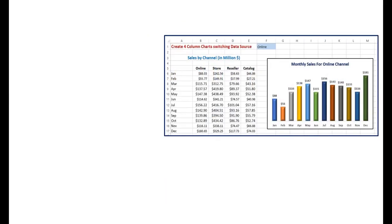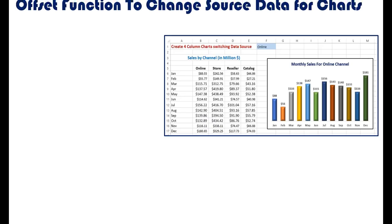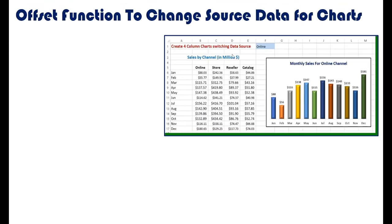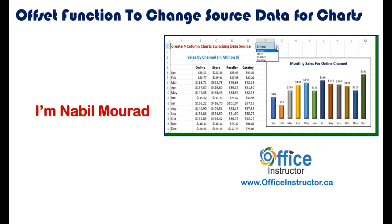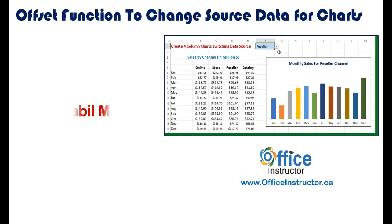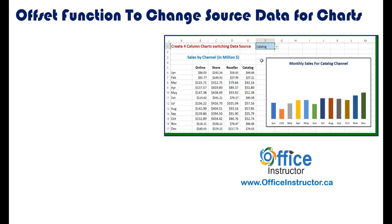Hi there. The purpose of a chart is to set the focus on changes in values, but having lots of charts defeats this purpose. I'm Nabil Murad. In our worksheet, we have sales amount by channel for each month. I would like to create a separate column chart for each channel, and be able to switch charts by selecting a different option from a drop list.